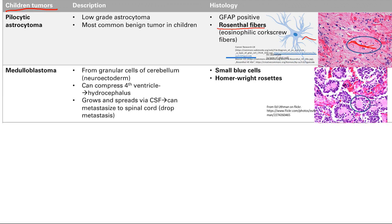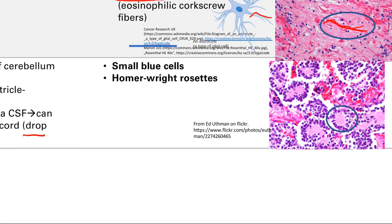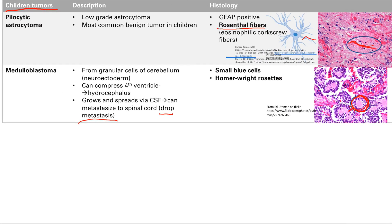The next one is the medulloblastoma, from cells of the cerebellum. This one can compress the fourth ventricle and cause hydrocephalus. It can also grow and spread via the cerebrospinal fluid, which is contiguous with the spinal cord — so if it drops down from the brain to the spinal cord, this is called a drop metastasis. On histology, you're going to see small blue cells and Homer Wright rosettes — tumor cells arranged in a circular pattern surrounding an empty lumen.